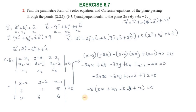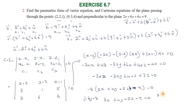Dividing by minus 8, we get 3x plus 4y minus 5z minus 9 equal to 0, which gives 3x plus 4y minus 5z equal to 9. So the vector equation is R vector dot (3i cap plus 4j cap minus 5k cap) equal to 9.